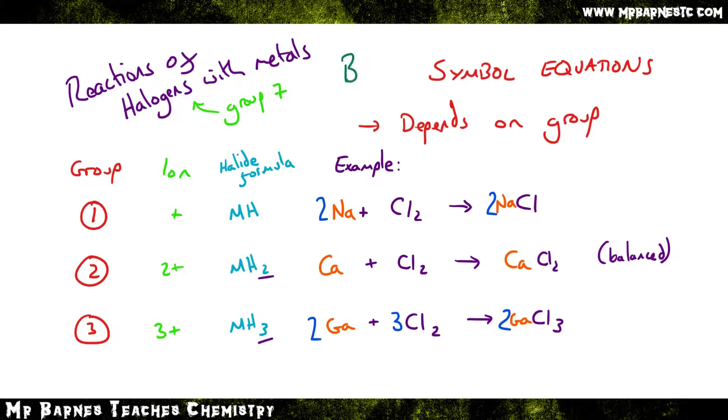This works the same if you change the halogen. So for example, if I use bromine, all I have to do is replace the Cl part, which you can see here gives me 2 Na plus Br2 goes to 2 NaBr, Ca plus Br2 goes to CaBr2, and 2 Ga plus 3 Br2 goes to 2 GaBr3.